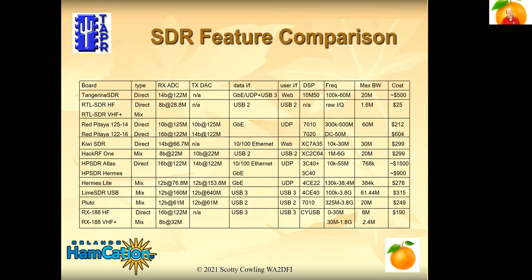This is a reference chart — a price and feature comparison of many SDRs currently on the market. I tried to limit it to boards that you can buy, more like experimenter boards rather than full-blown radios. It's difficult to compare a lot of these; you really have to look them up yourself, especially regarding receive and transmit DAC channel counts. So it's a bit simplistic, but gives you a good jumping-off point to get a feel for the SDRs available today.